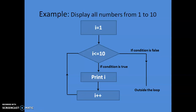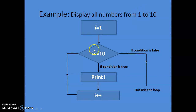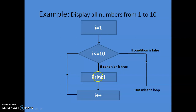Let's see the flowchart with an example. Say we want to write a program to display all numbers from 1 to 10. We initialize the loop variable i with 1, because we have to start the loop from 1. Now we check the condition: i is less than equal to 10. Why this condition? Because we want to display all values up to 10. If the condition is true, we print the value of i.